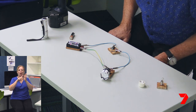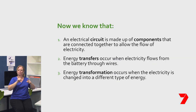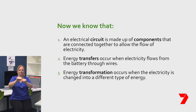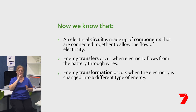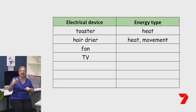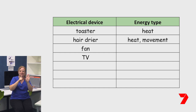Let's review what we've learnt today. We now know that an electrical circuit is made up of components connected to allow the flow of electricity. Number two: energy transfer occurs when electricity flows from the battery through the wires. Number three: energy transformation occurs when the electricity is changed into a different type of energy. Here's something to try at home: try making a list of all the devices around your home that are powered by electricity, and beside each one, note what form of energy it transforms electricity into — for example, light, heat, motion, or sound.